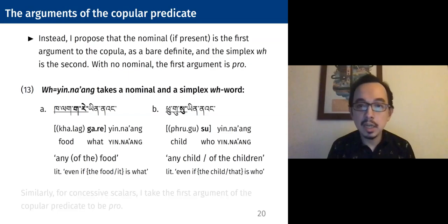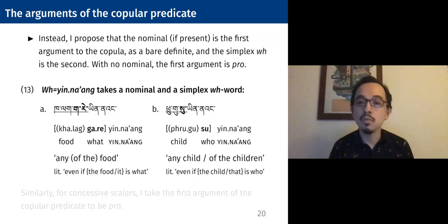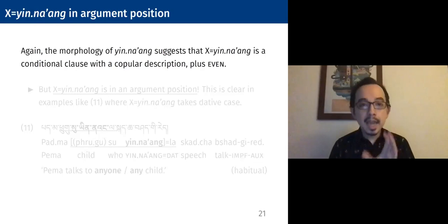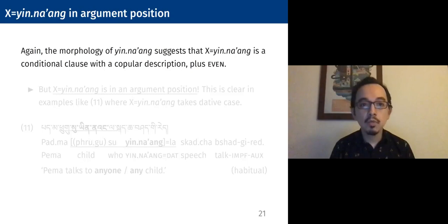This means 'any child' or 'any of them' or 'anyone' — any living or human thing — and that literally is 'even if the child is who' or 'even if pro is who.' This logic also applies to the concessive scalars, where the first argument will in these examples all be a null pro. Now turning to the second problem: remember that yinang, per its morphology, is a kind of conditional clause with even on it, but we see yinang in argument positions. So in example 11 repeated, it takes a dative case enclitic or suffix.